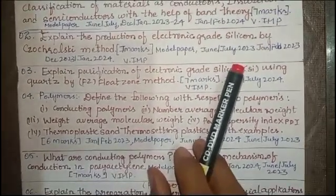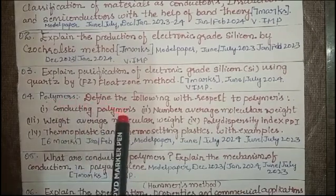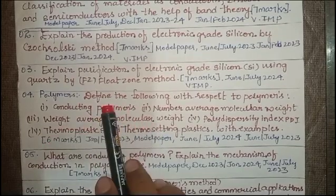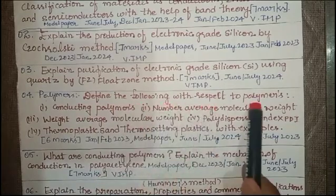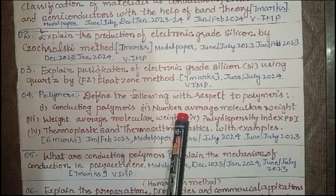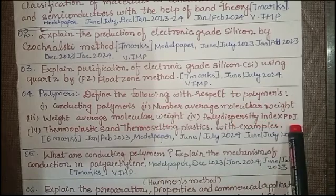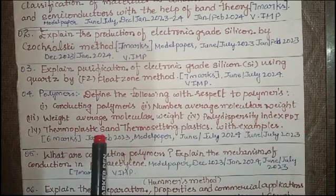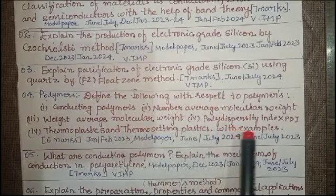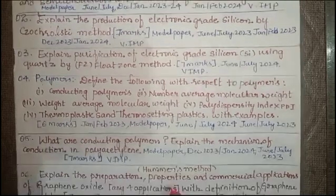Let us go to the topic polymers. Here we have to deal with the definition and with respect to their examples. The question is: define the following with respect to polymers. You have to explain about conducting polymers, number average molecular weight, weight average molecular weight, polydispersity index (PDI), thermoplastics and thermosetting plastics. You have to write the definition as well as examples, and they may be asked for six marks as well as seven marks depending upon the question setup.